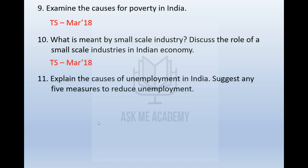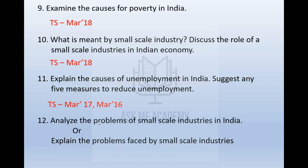The next question is: explain the causes of unemployment in India and discuss any 5 measures to reduce unemployment — asked twice. The 12th question is: analyze the problems of small scale industries in India, also phrased as explain the problems faced by small scale industries — asked 3 times. This is also a very important question.